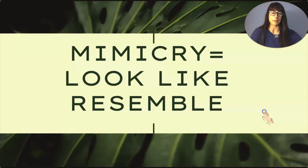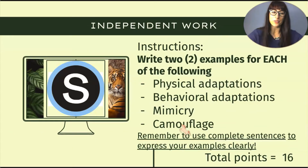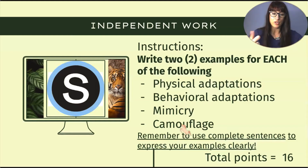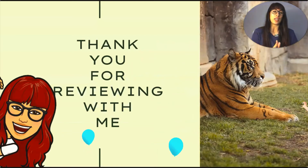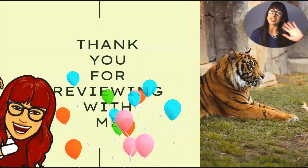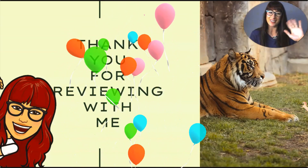Now it's your turn. In Schoology you'll find independent work where you are asked to write two examples for each of the following: two physical adaptations, two behavioral adaptations, two examples for mimicry, and two examples for camouflage. Remember to use complete sentences to express your examples clearly. This assignment is worth 16 points. Thank you for reviewing with me — I hope this was helpful, and I'll see you in my next video. Bye, blessings to you all!